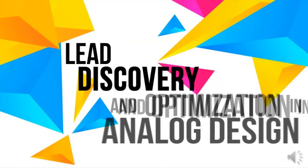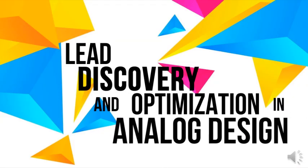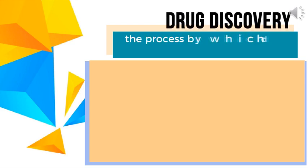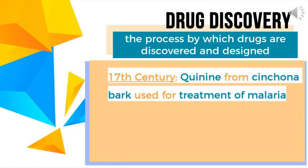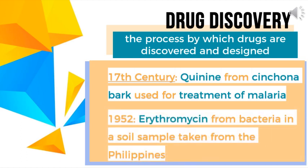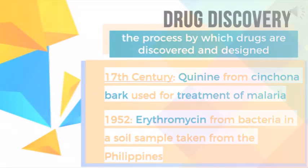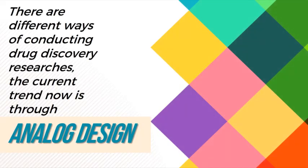Need Discovery and Optimization in Analog Design. Drug discovery is the process by which drugs are discovered and designed. Some notable examples are the discovery of quinine from cinchona bark through an ethnobotanical approach and erythromycin from Streptomyces erythreus through random sampling. Through the years, the methods for conducting drug discovery have advanced, and the current trend now is through analog design.